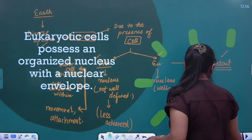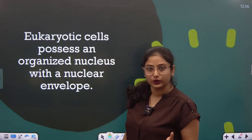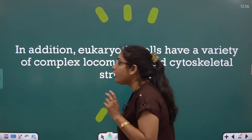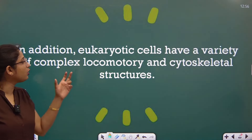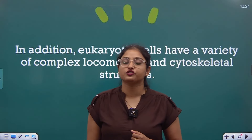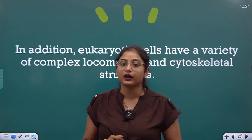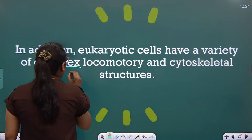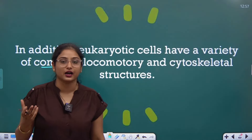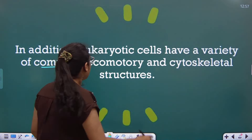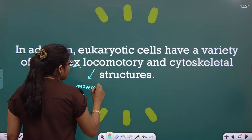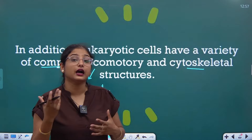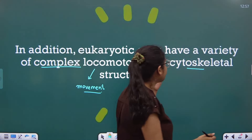Eukaryotic cells possess an organized nucleus — a well-defined nucleus with a proper nuclear envelope, meaning a proper nuclear boundary in which everything is enclosed. In addition, eukaryotic cells have a variety of complex locomotory and cytoskeletal structures. Like in prokaryotic cells there was a flagella for locomotion and pilli and fimbriae for attachment, similarly in eukaryotic cells there are many complex locomotory and cytoskeletal structures. Locomotory means related to movement, and cytoskeletal means structures that define the cell's shape and size.